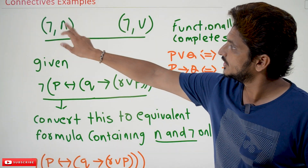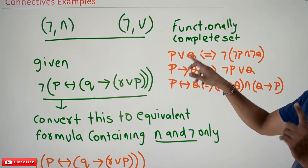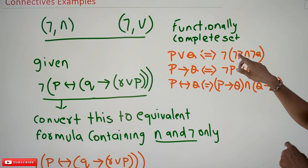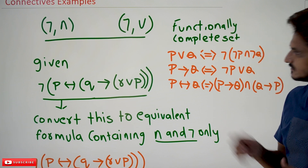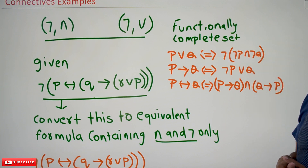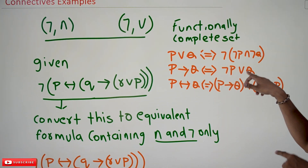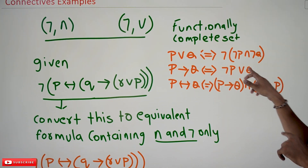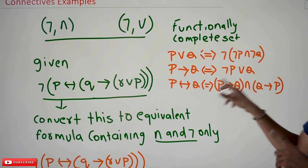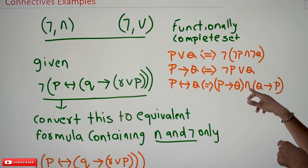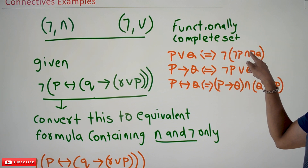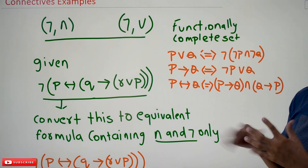So how are we going to convert into negation and conjunction? If you have p disjunction q, this can be equivalently written as negation of (negation p conjunction negation q) — using De Morgan's law. Similarly, p implies q can be written as negation p disjunction q. If you have a disjunction, again convert it into conjunction. And p double implies q can be written as (p implies q) conjunction (q implies p). Implies can be converted to disjunction, and disjunction can be converted to conjunction.